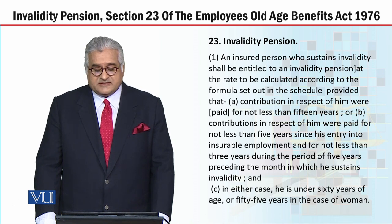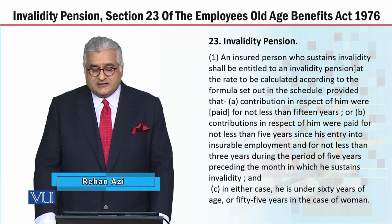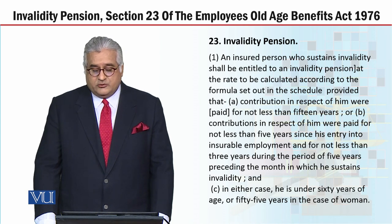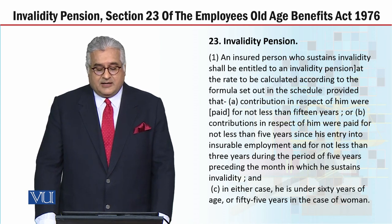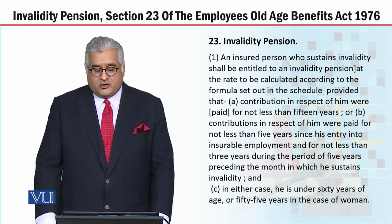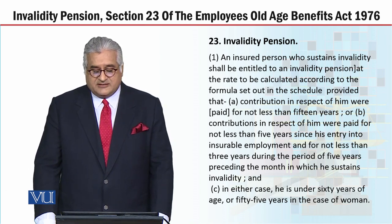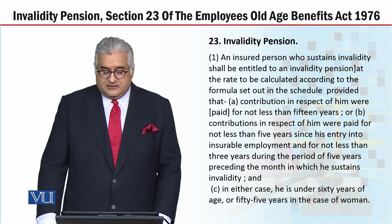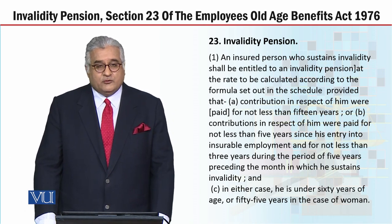An insured person who sustains invalidity shall be entitled to an Invalidity Pension at the rate to be calculated according to the formula set out in the schedule, provided that contributions in respect of him were paid for not less than 15 years, or contributions were paid for not less than 5 years since his entry into insurable employment and for not less than 3 years during the period of 5 years preceding the month in which he sustains invalidity.